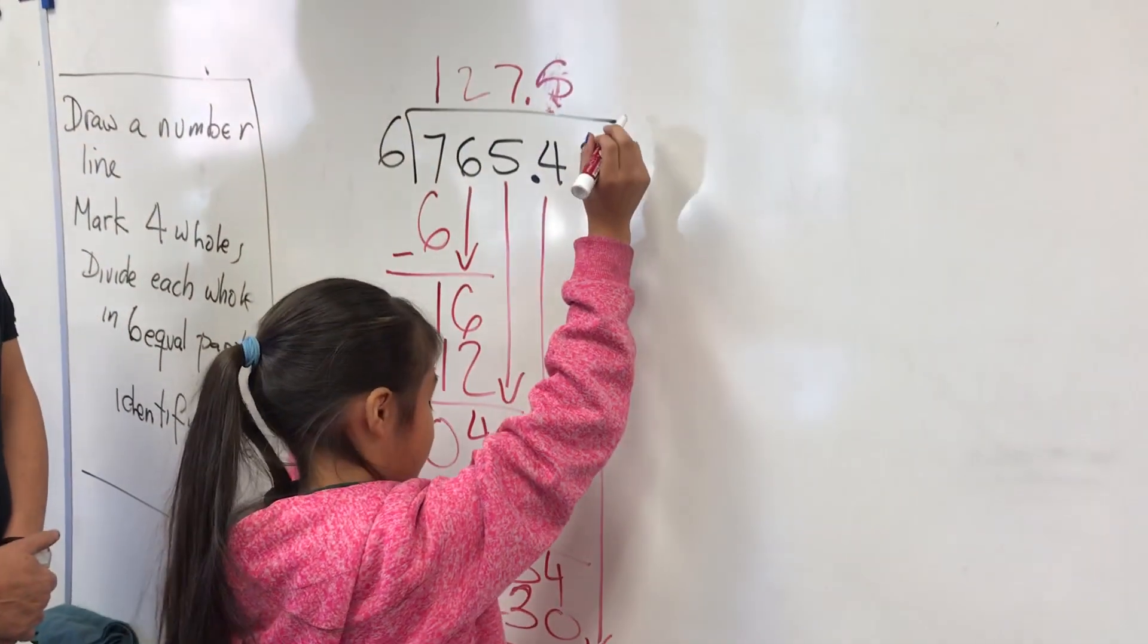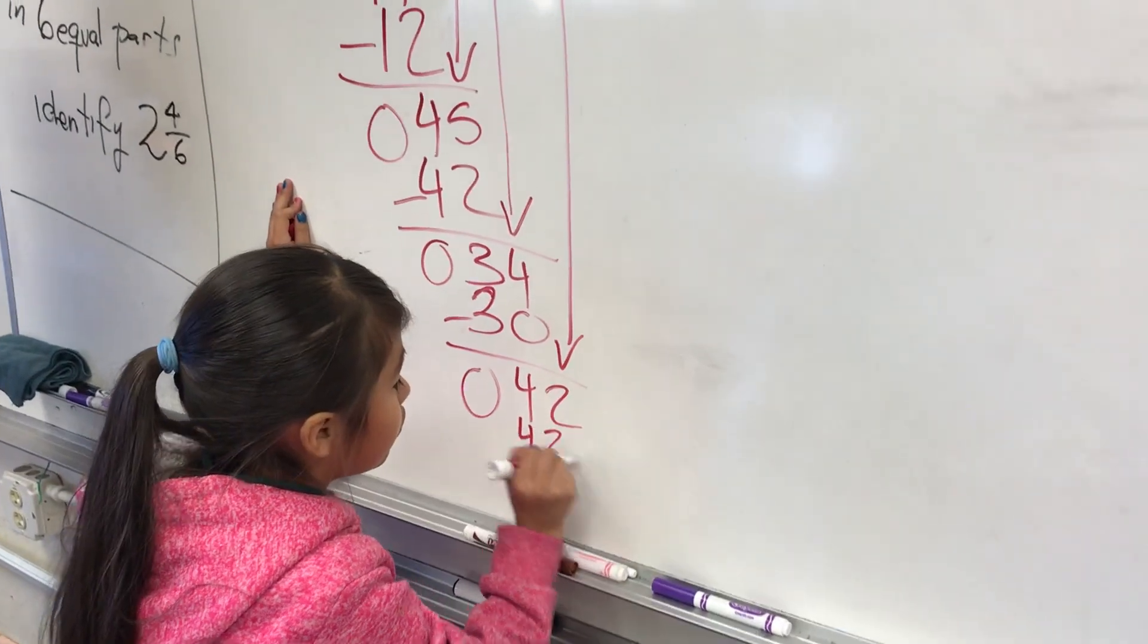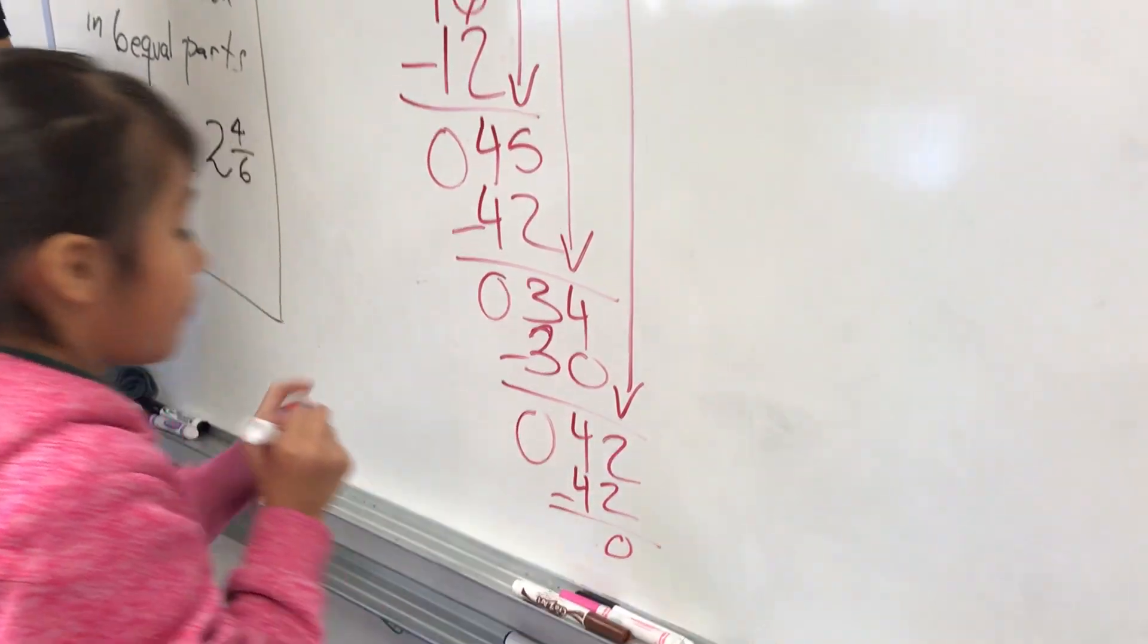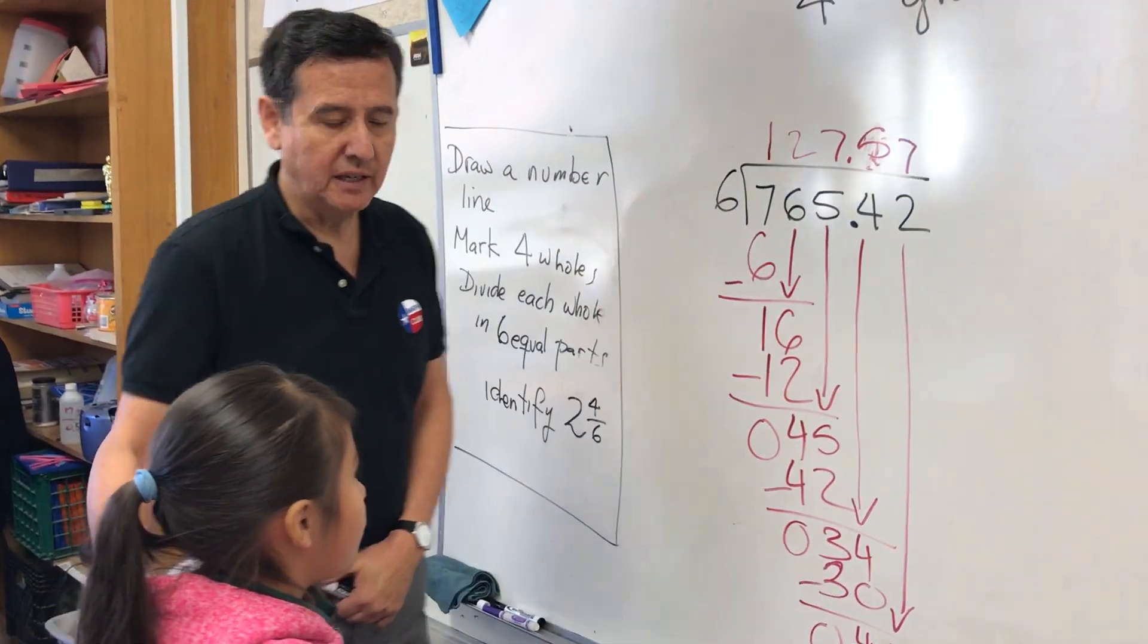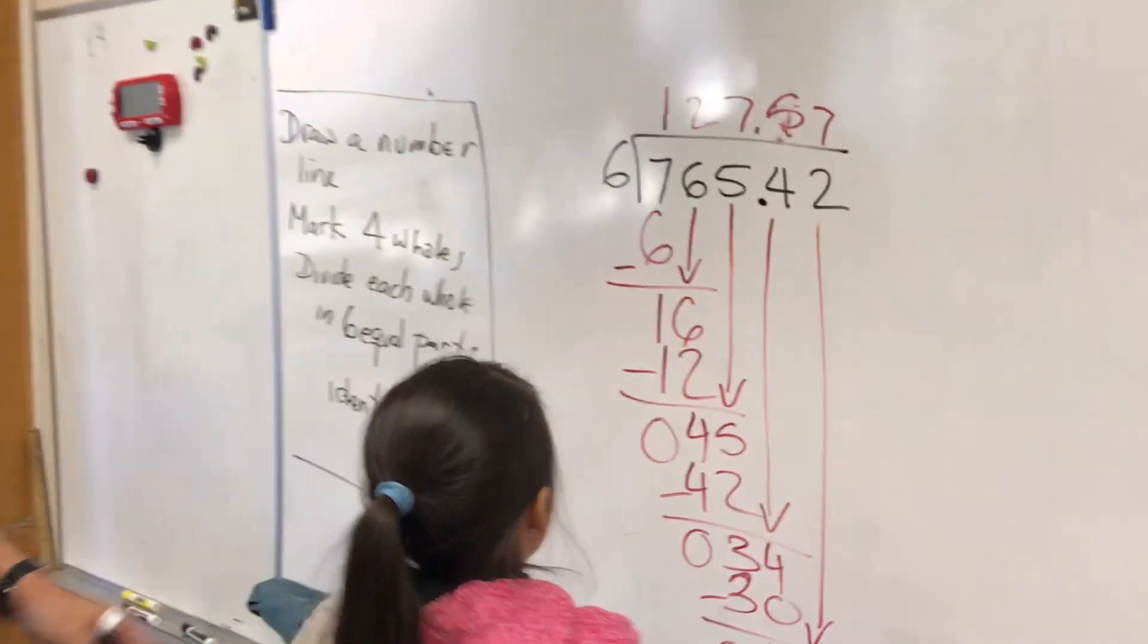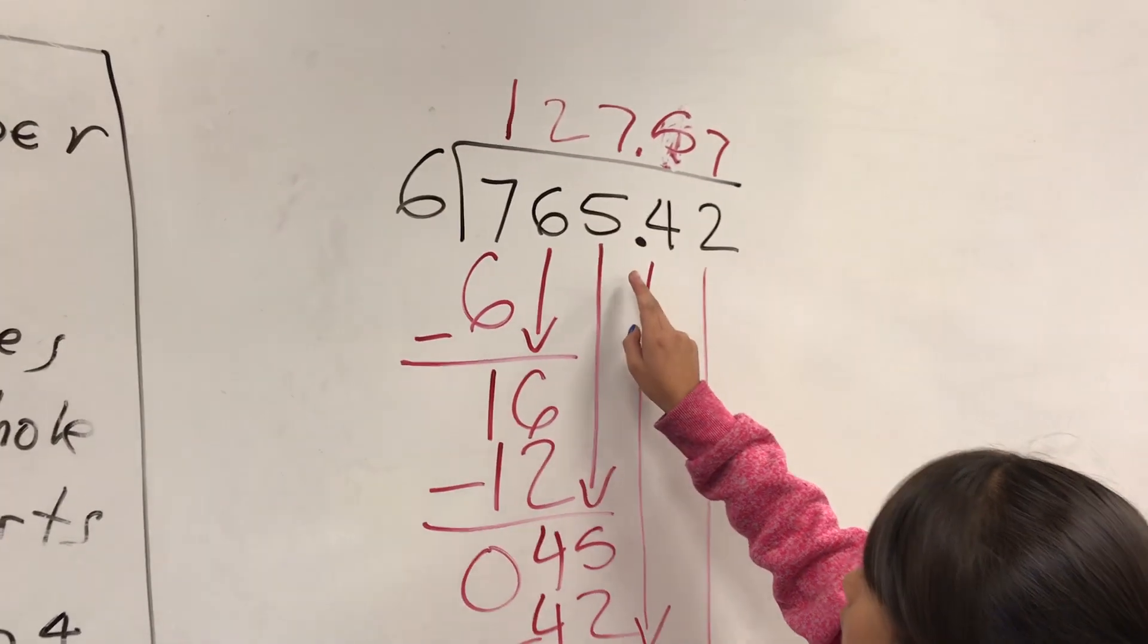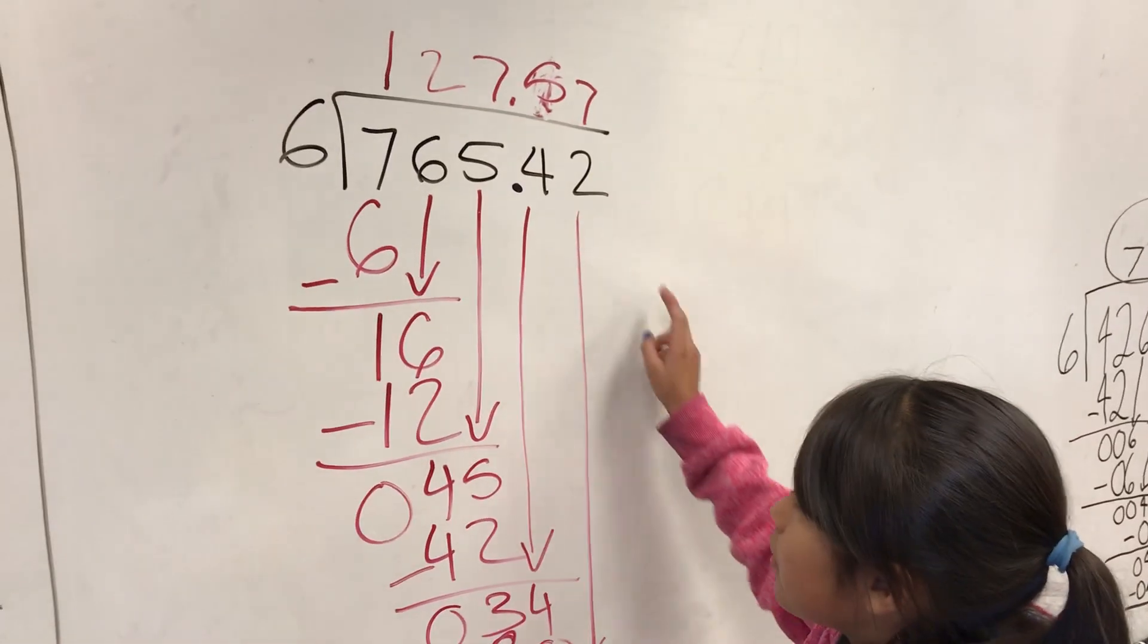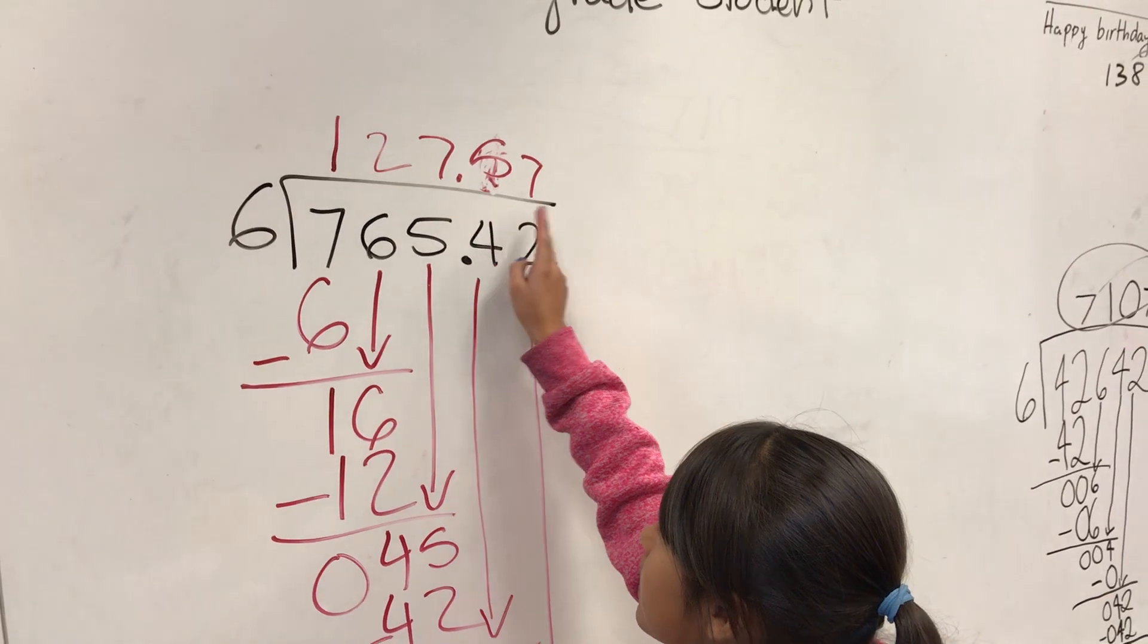Yes, and you got a zero. Okay, so what is your final answer? Say it loud, use your fingers. 676,542 divided by 6 equals 112,757. Great!